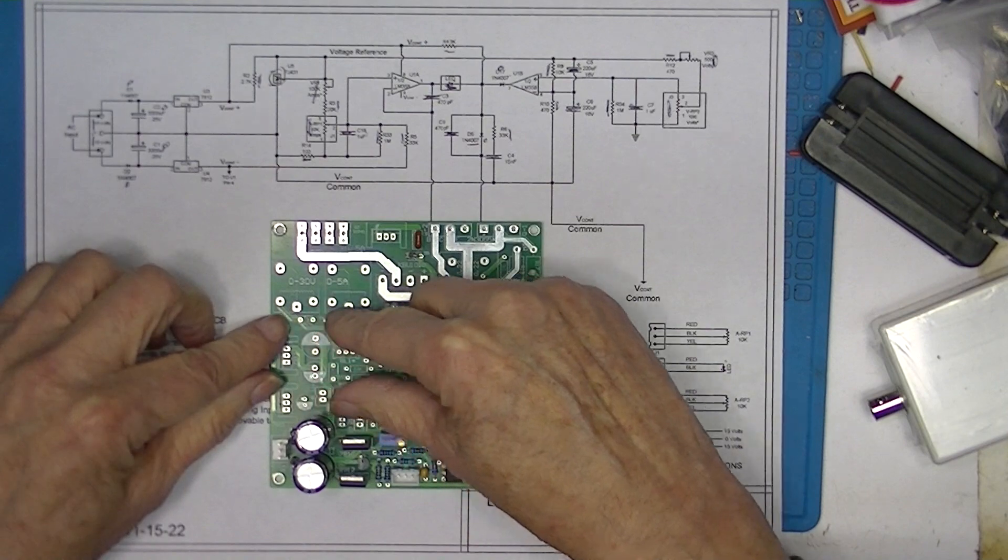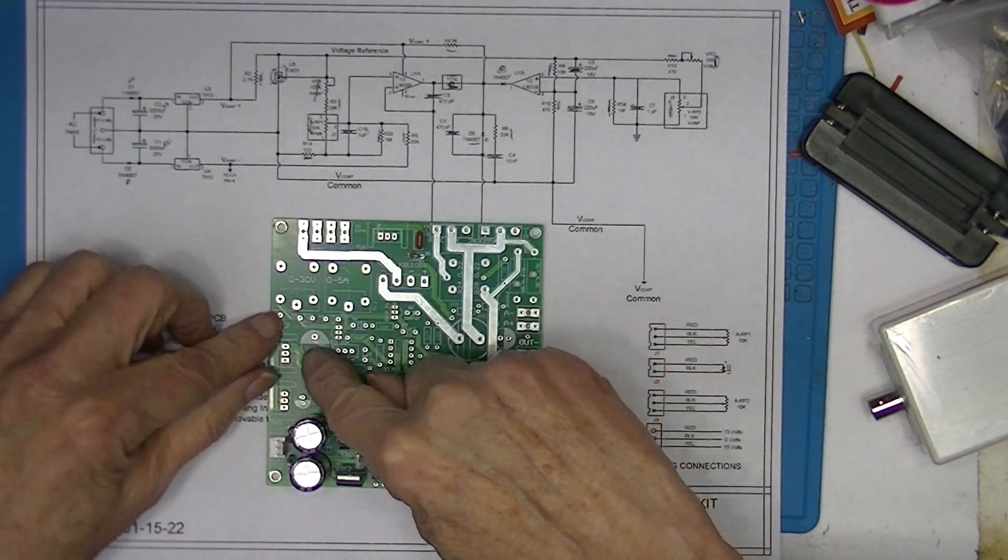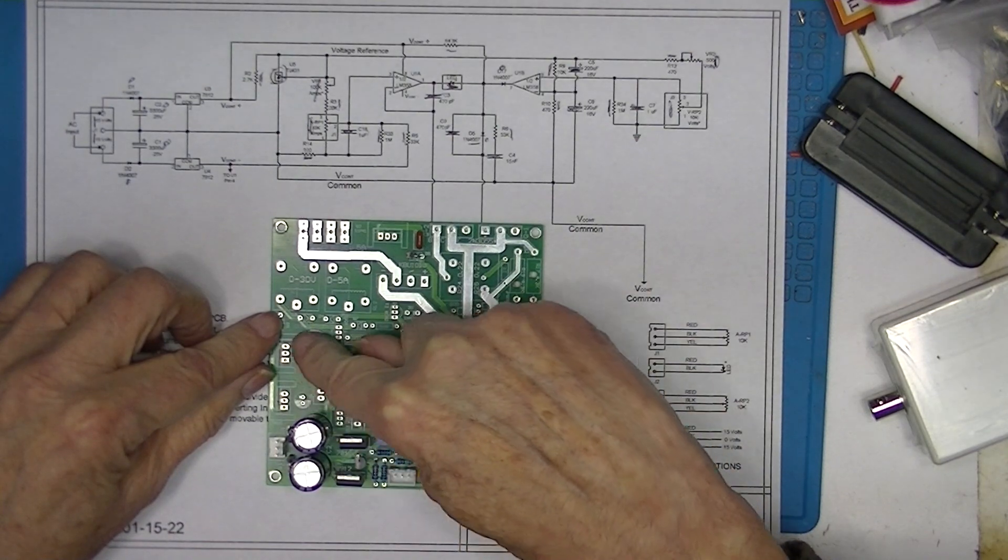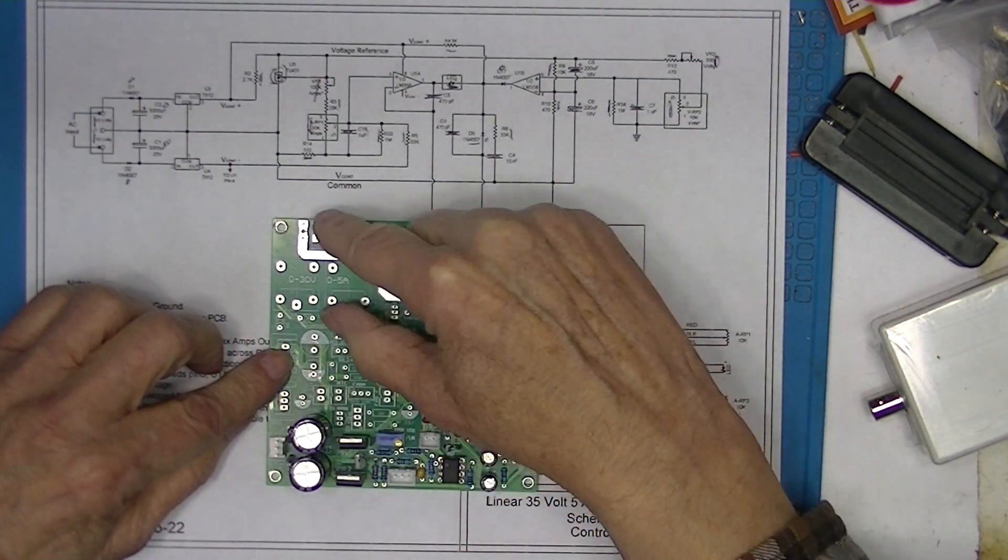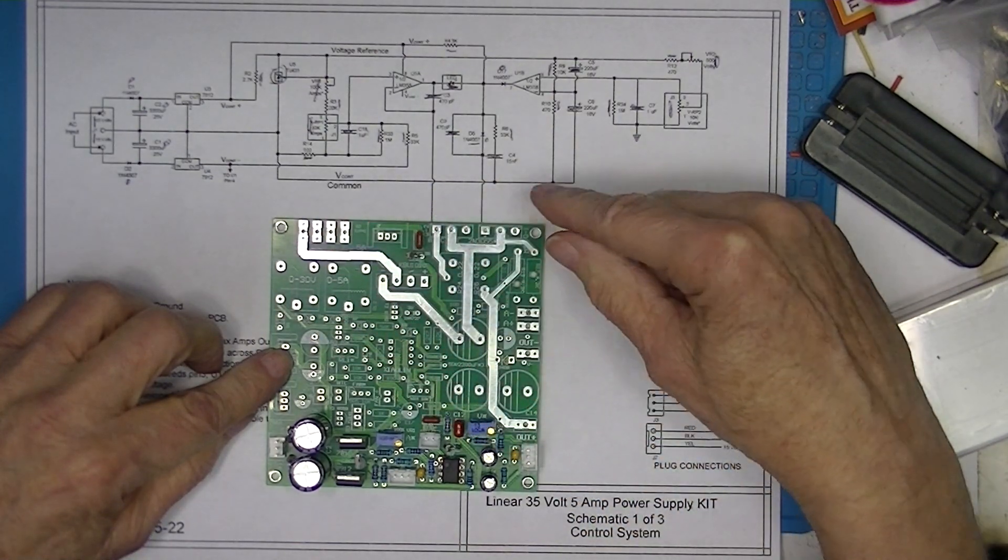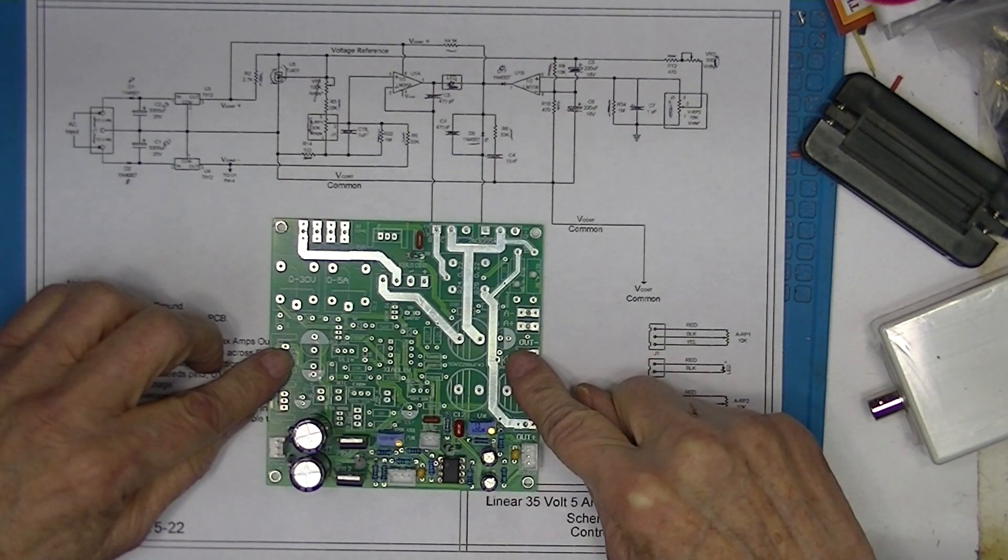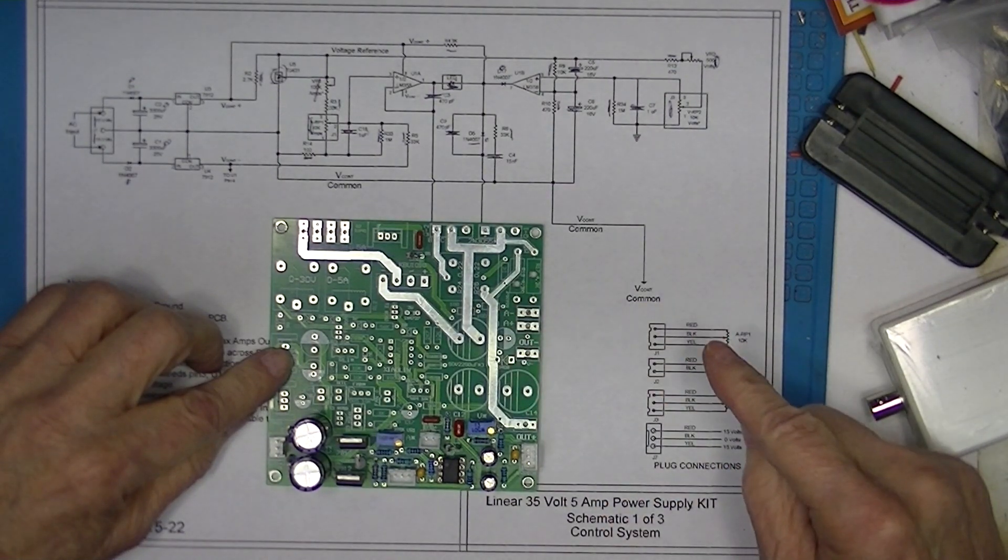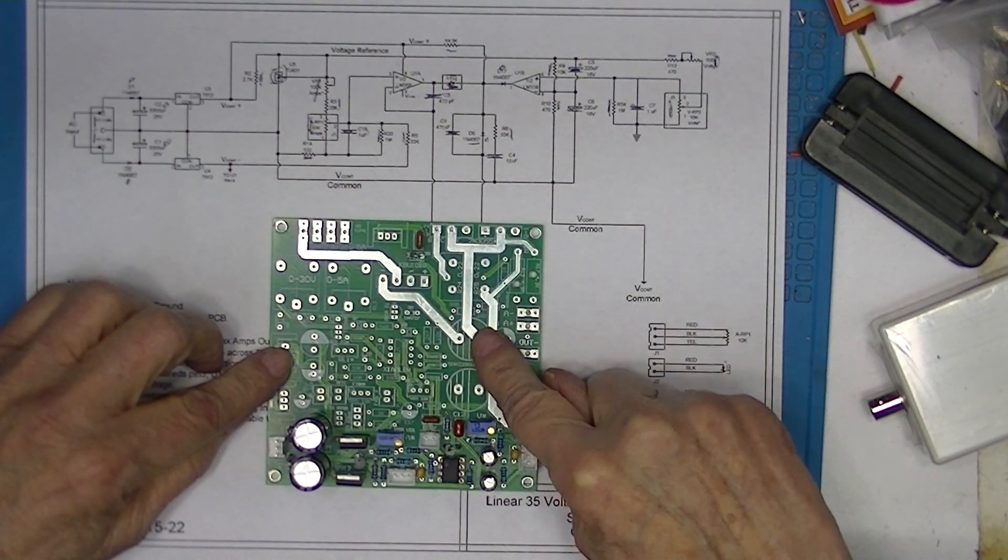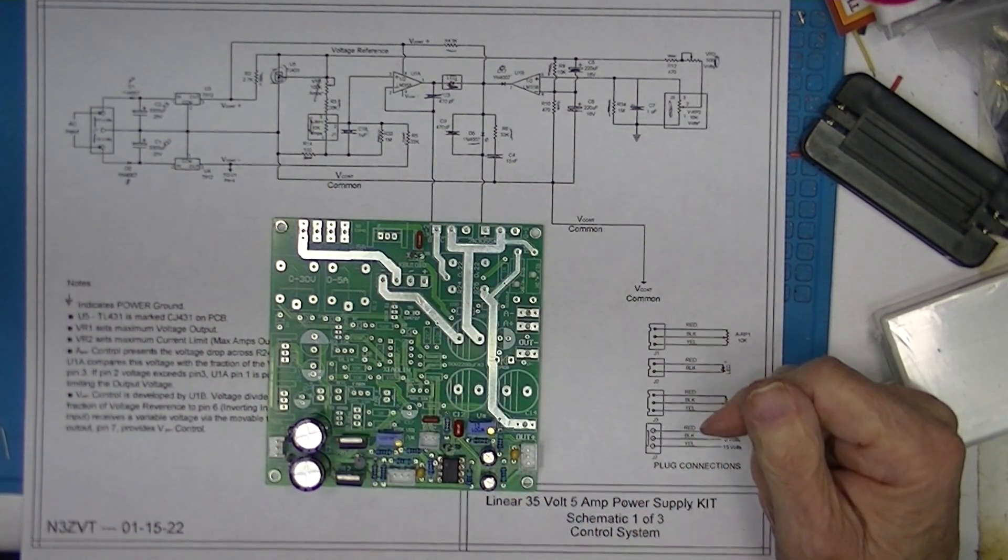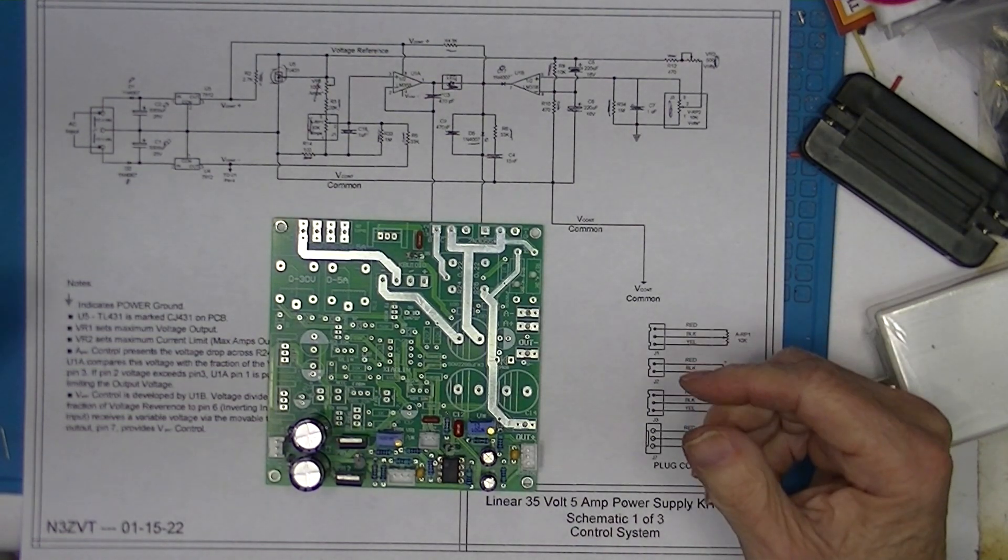The center section is all, well, with the exception of these. This area here is all on sheet 3, which I call the auxiliary circuits. And then this, most of this, and these capacitors constitute sheet 2, which I call the power system. So this will be part one. Let's see what happens.